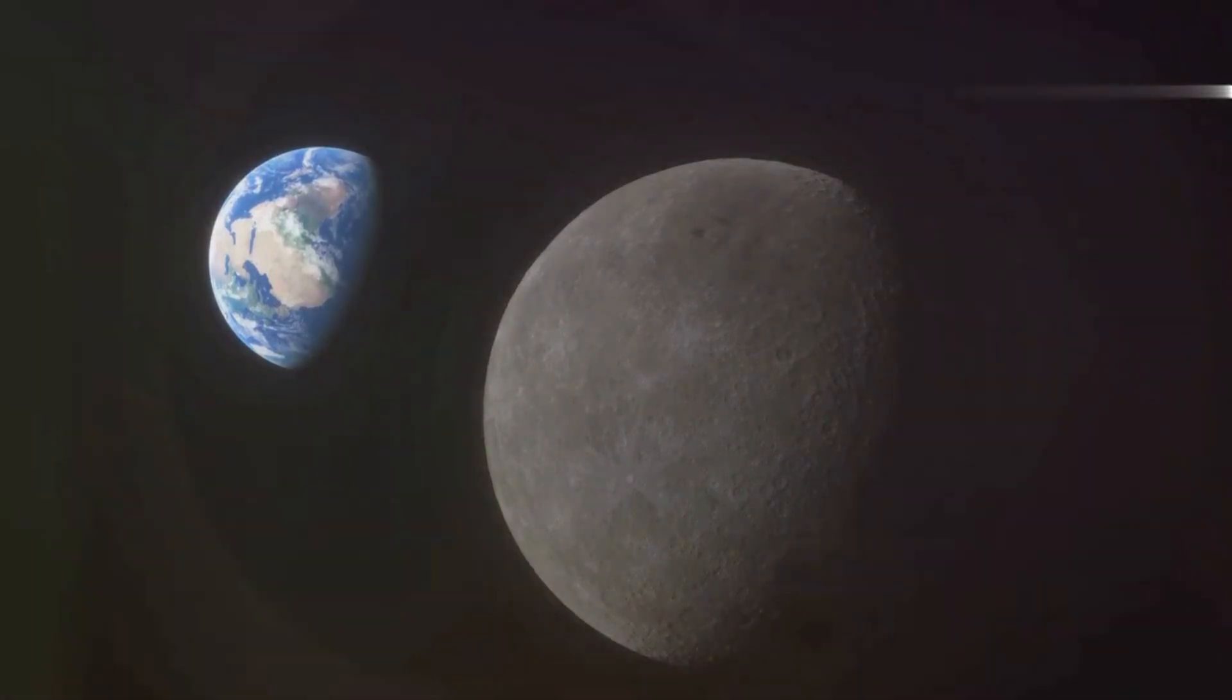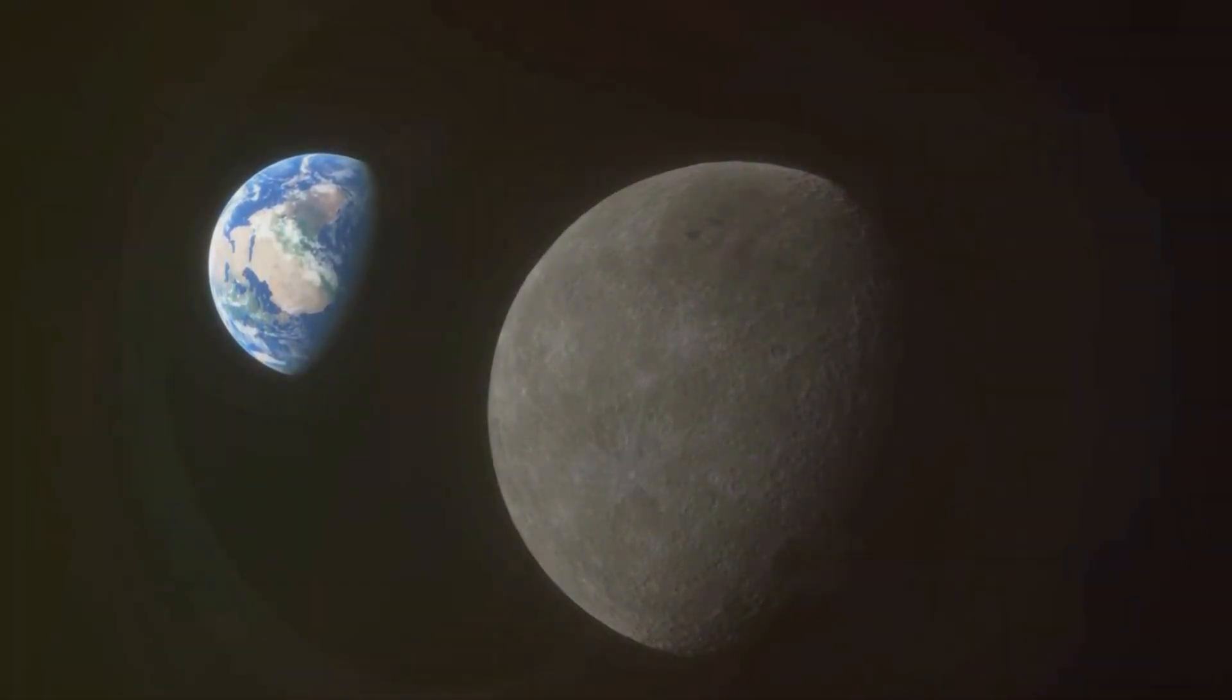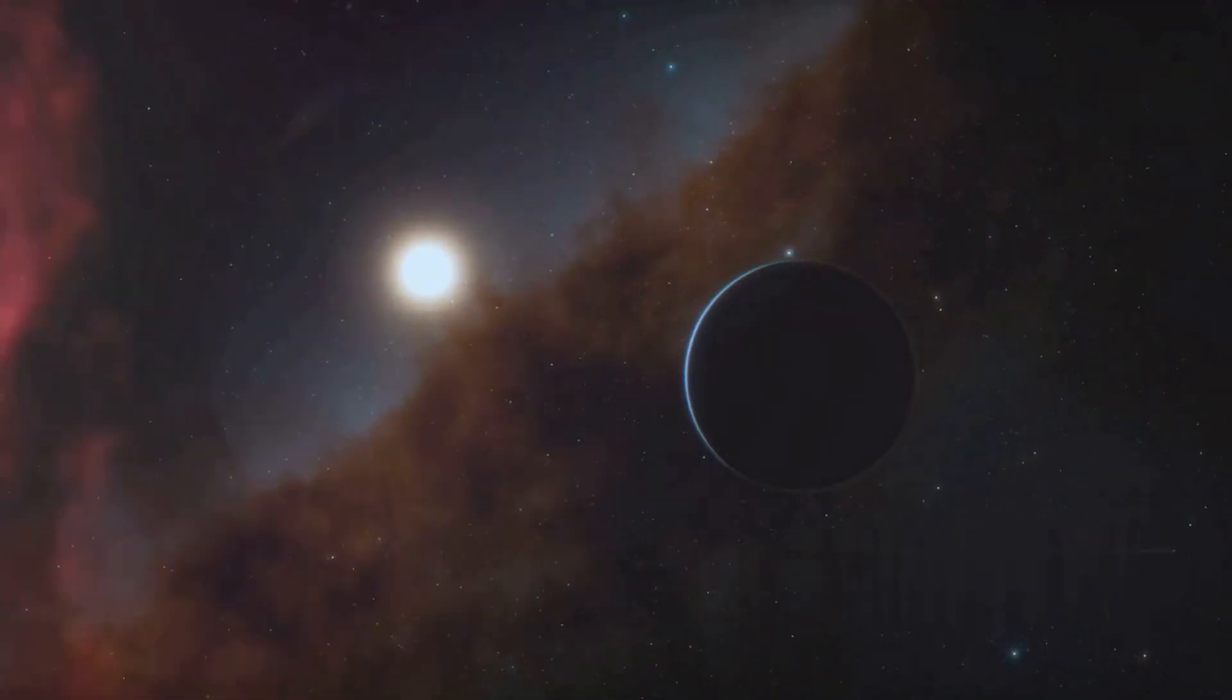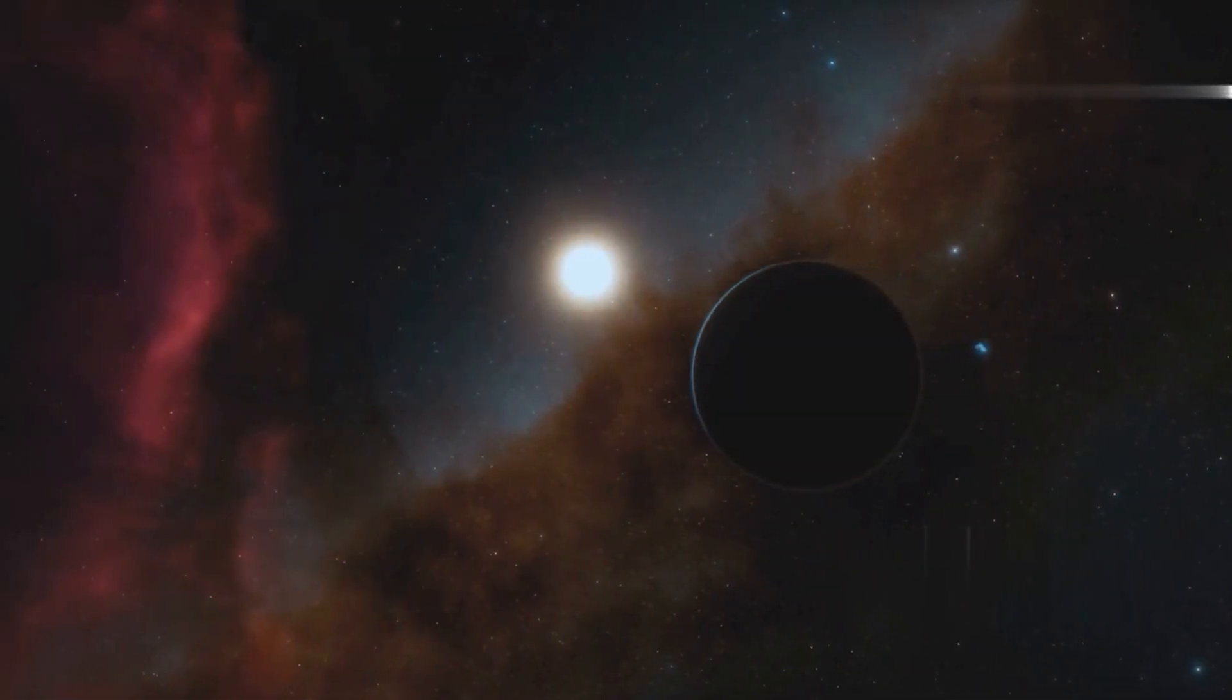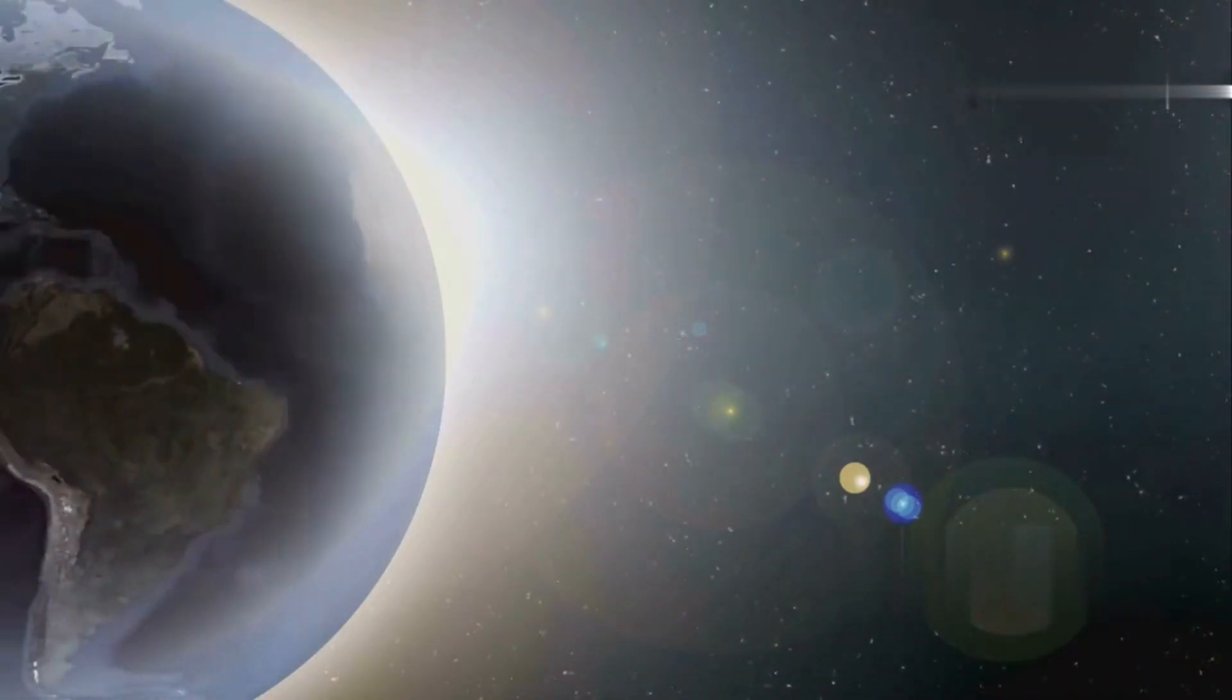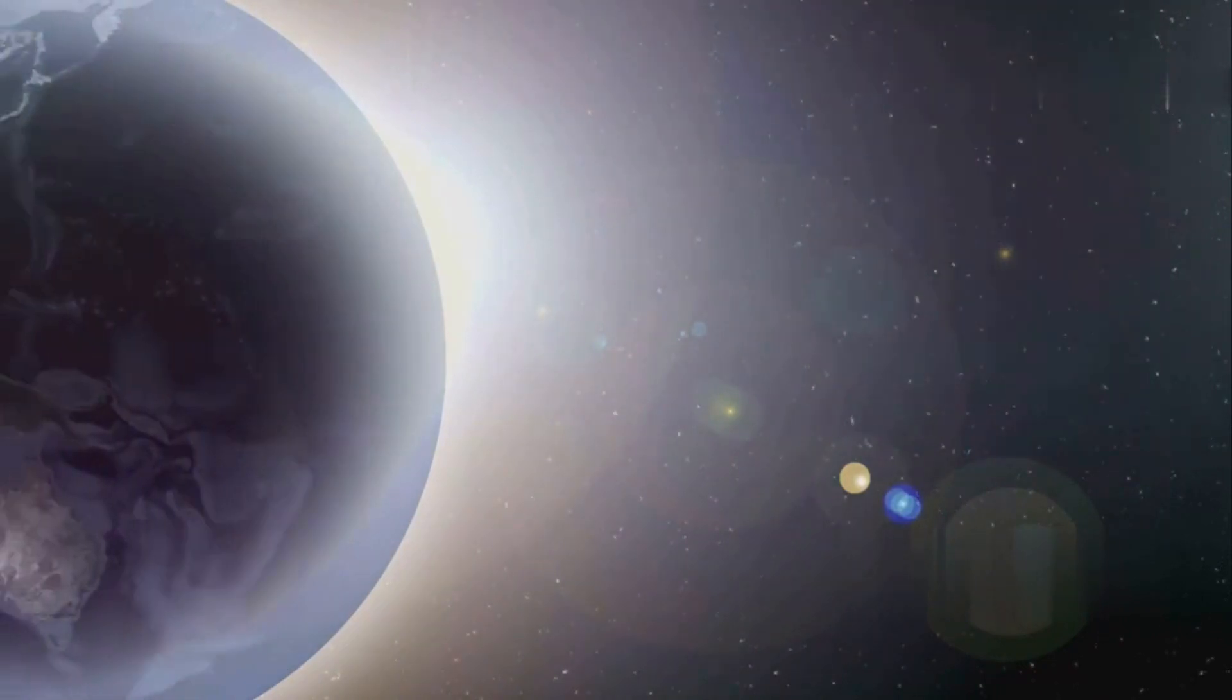Gliese 12b is about twice the size of Earth and possesses a mass nearly eight times greater. This suggests a composition denser than our planet, possibly with a rocky core and a substantial atmosphere. The question that has captivated scientists is its potential to harbor the essential ingredient for life as we know it: liquid water.